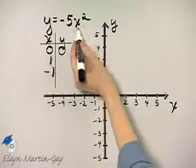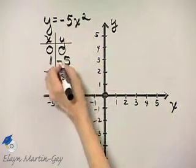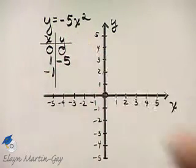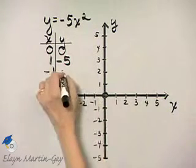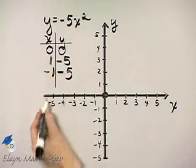If x is one, one squared is one, one times negative five is negative five. Same thing if x is negative one, negative one quantity squared is one, one times negative five is negative five. So let's plot these points then.